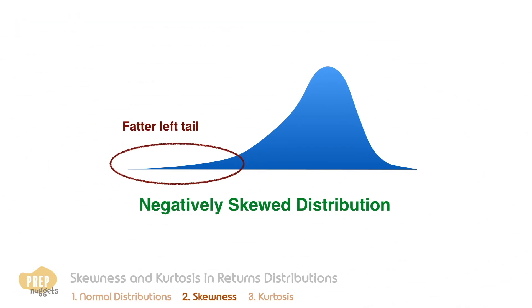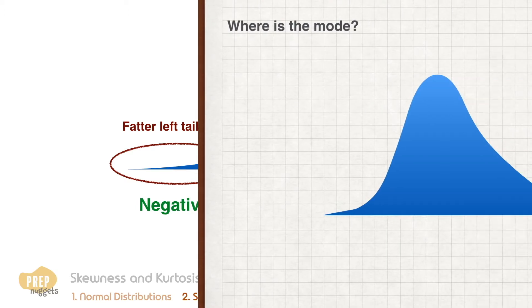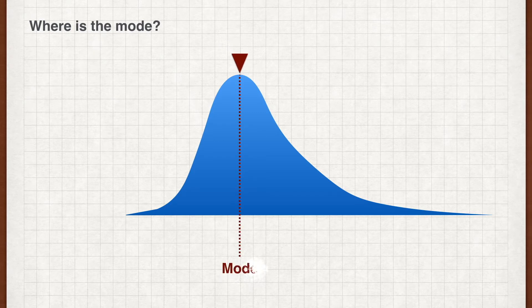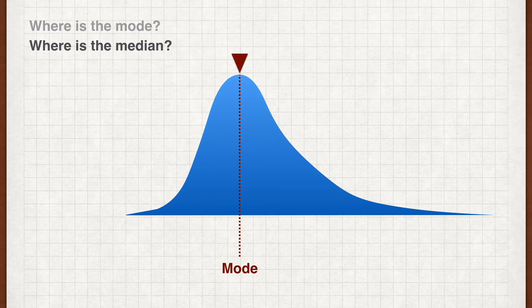Let's do a short exercise. Given a positive or right-skewed distribution, can you determine where the mode is? This one is quite simple — the mode is the observation with the highest frequency, therefore it corresponds with the peak of the frequency distribution. Next, in relation to the mode, where do you think the median is — to the left or to the right?